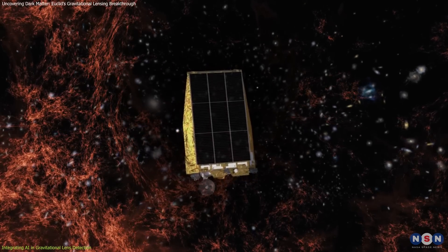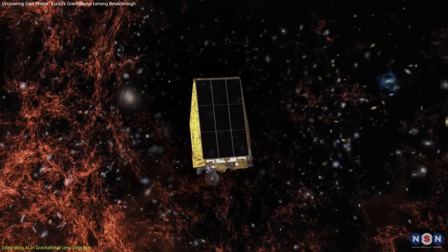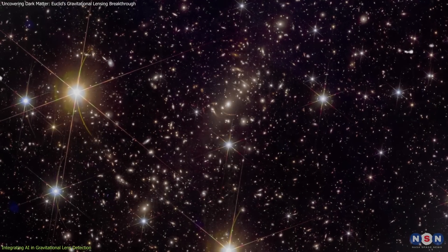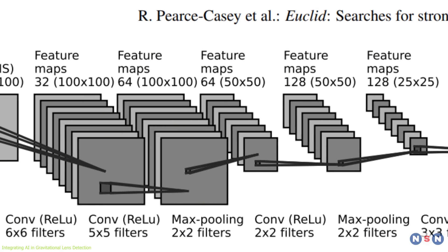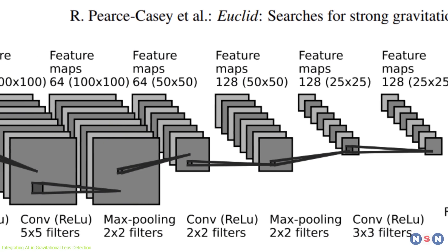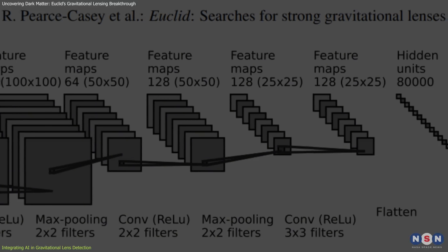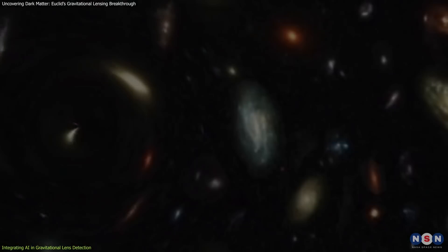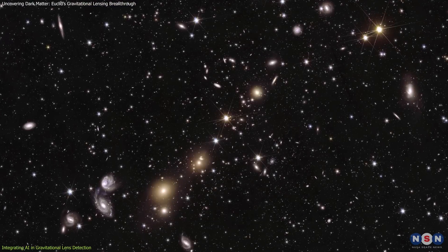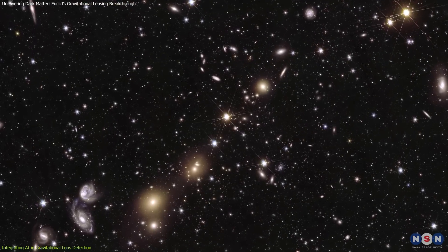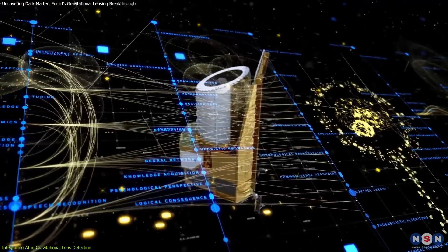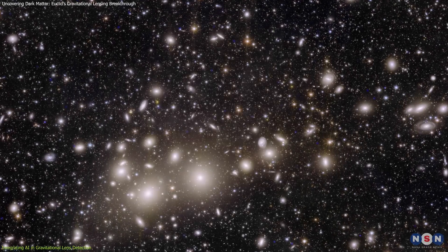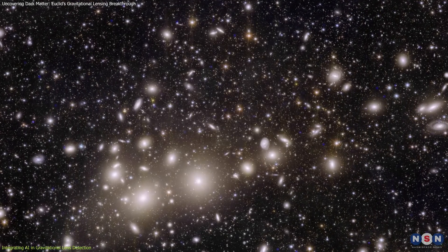The workflow begins with pre-processing images from Euclid's survey to enhance quality and reduce noise. These images are then fed into the CNN, which evaluates them for lensing characteristics such as arcs and rings. If potential lensing features are identified, the images are flagged for further analysis. This automated process significantly reduces the time and effort required to sift through Euclid's enormous dataset.